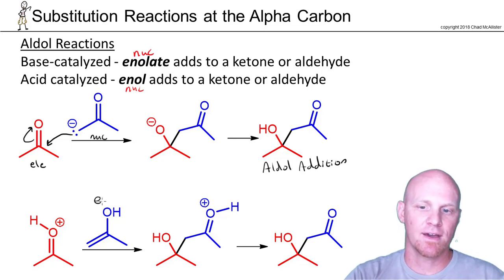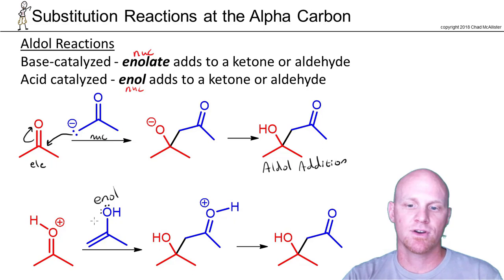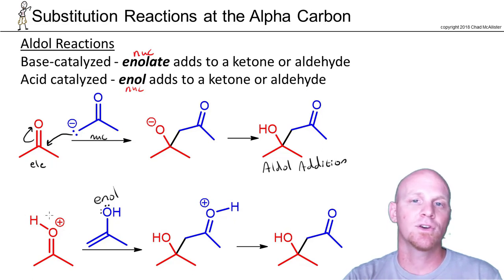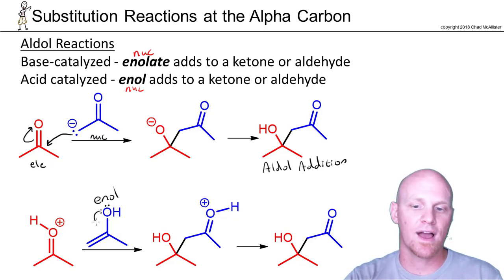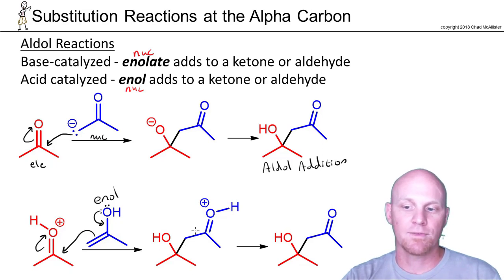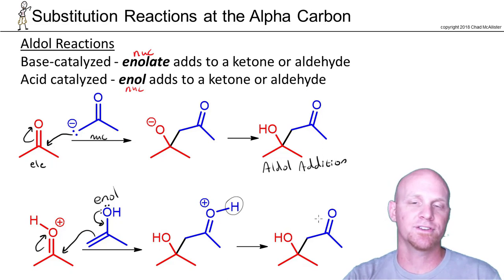In the acid-catalyzed mechanism, the enol is the nucleophile. Enols are not as good of a nucleophile as an enolate, so they wouldn't react with a ketone directly — you actually have to protonate your ketone first. So when they react, they're actually reacting with a protonated ketone or aldehyde, giving us the new bond shown in black. Then you just need to deprotonate this hydrogen, and that gets you to your aldol addition product.